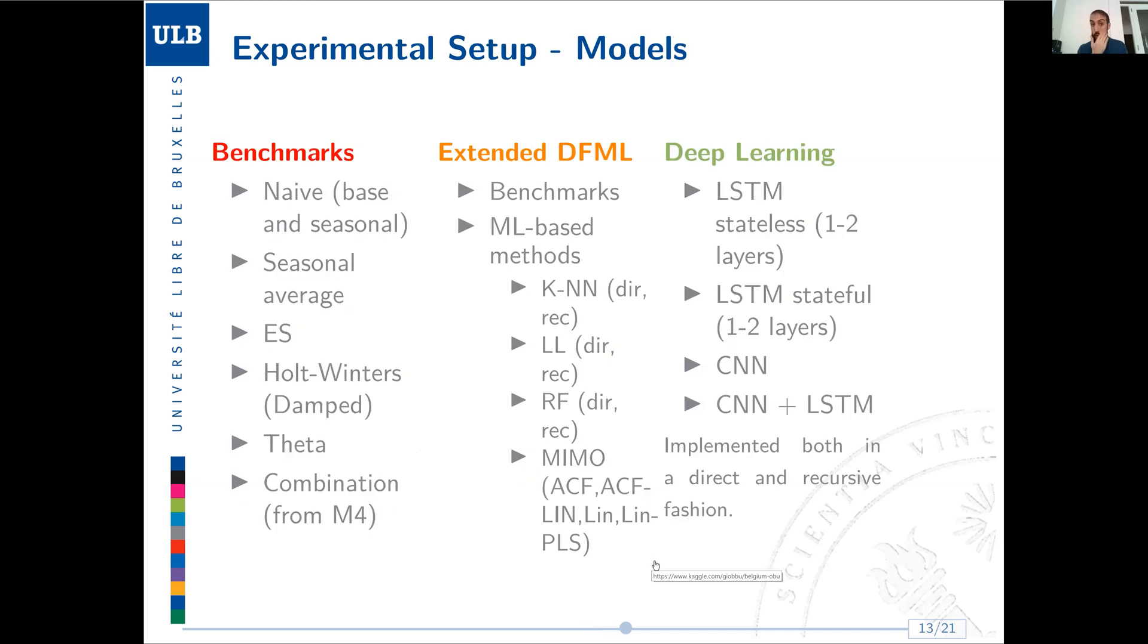For the experimental setup, what we also tried to compare was how does our model, the extended DFML, perform with respect to, on one hand, a set of univariate statistical benchmarks, and on the other hand, some global kind of modeling through deep learning, using LSTM stateless, stateful, CNN, and a combination of CNN and LSTM. As for the benchmarks, it's once again the benchmarks represented before, mostly those used during the M4 competition.